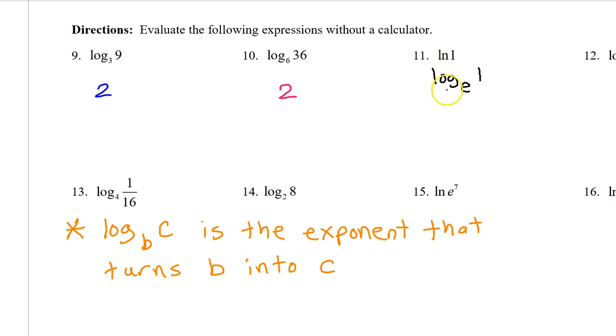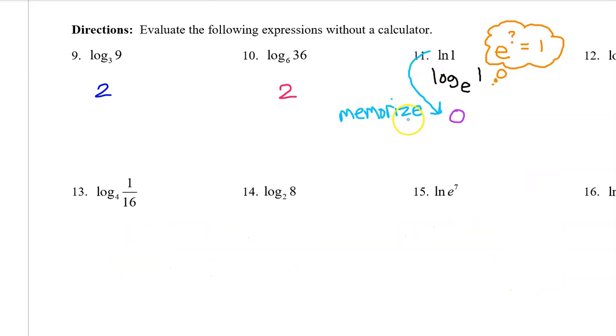Natural log 1 really means the same thing as log base e of 1. So you evaluate by asking yourself, what power turns e into 1? Well, we know that anything to the 0 power is equal to 1. So this must be 0. e to the 0 power is 1, just like 5 to the 0 power is 1, 7 to the 0 power is 1. By the way, e is a constant like pi. It's approximately 2.718. This comes up often enough that I need you to memorize this. Memorize that the natural log of 1 is 0 without having to think about it.